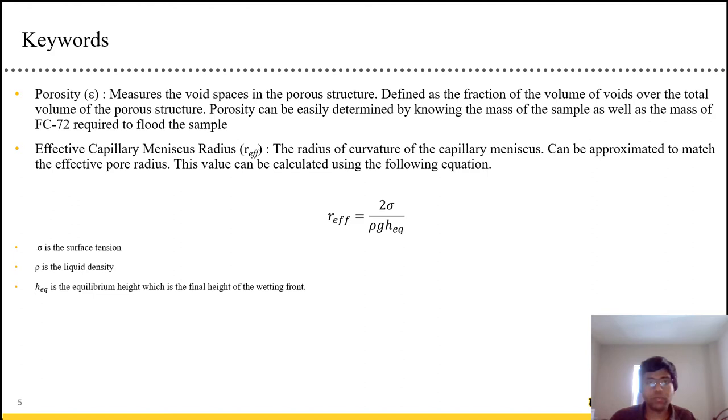Some of the keywords are, first one is porosity. It shows you the void space inside the porous media. And you can easily find it by comparing the mass of the wick structure with the fluid inside it and the mass of the wick structure without the fluid inside it.